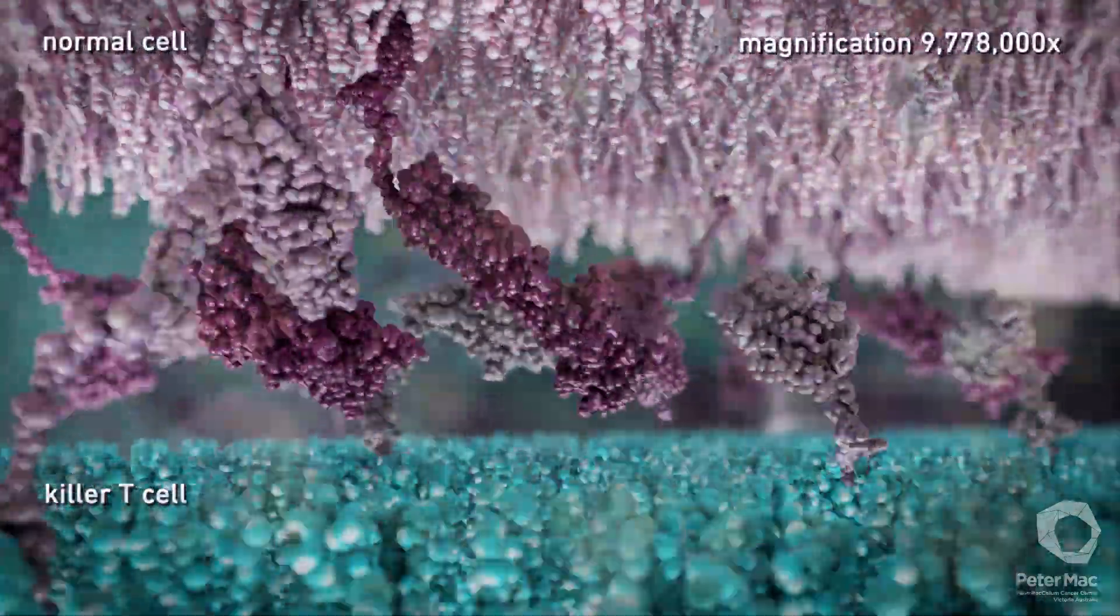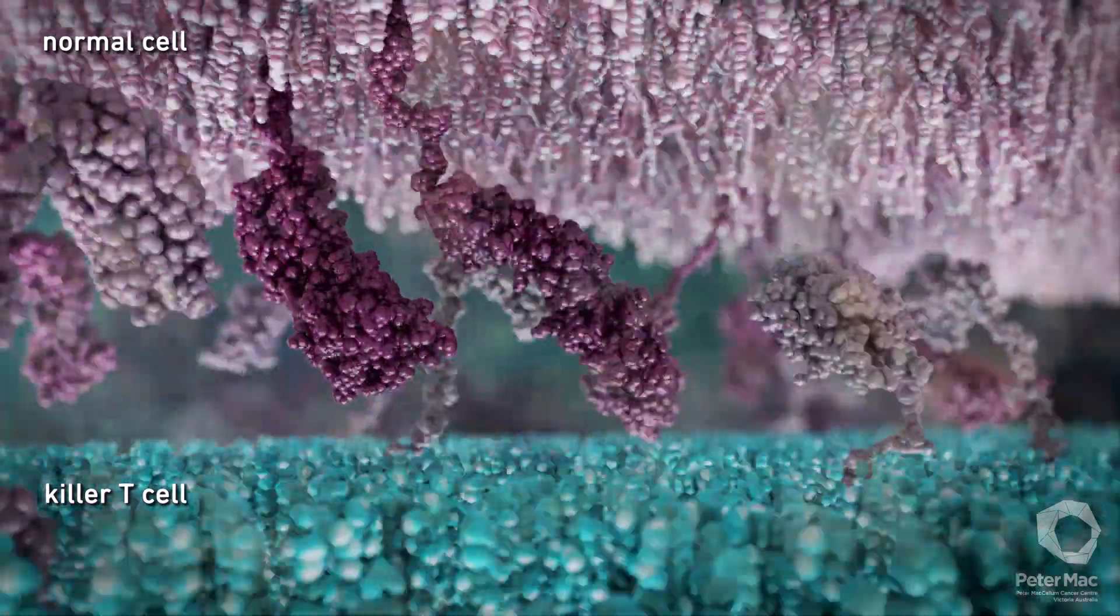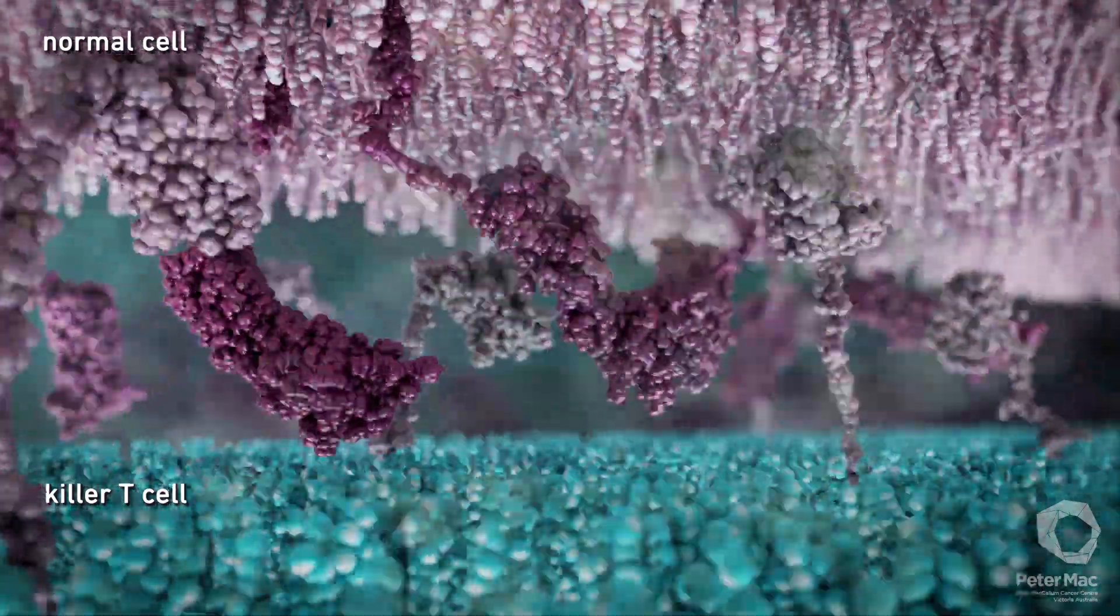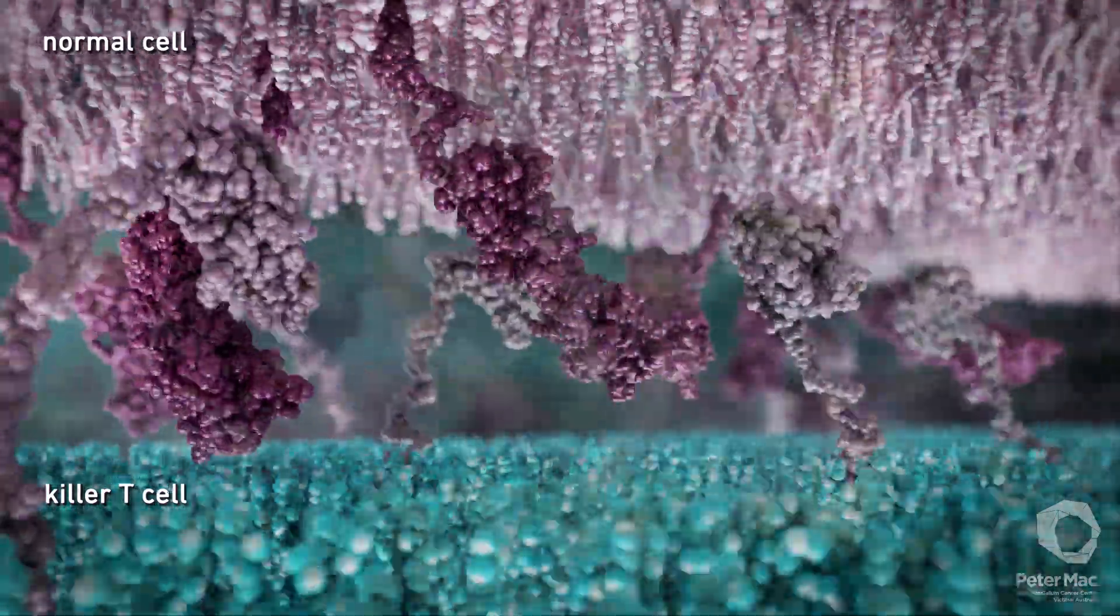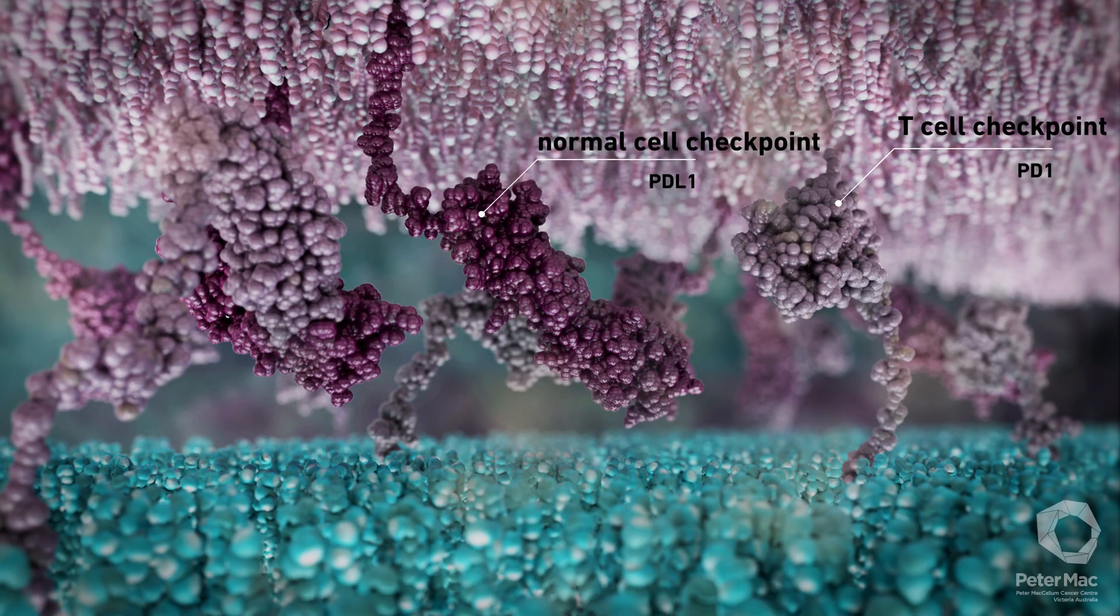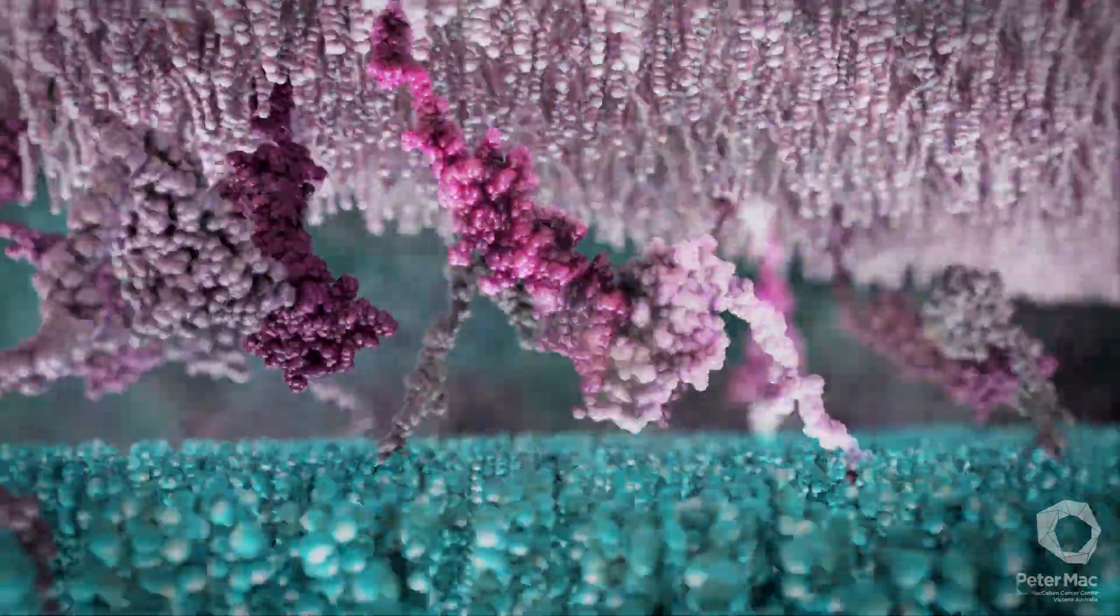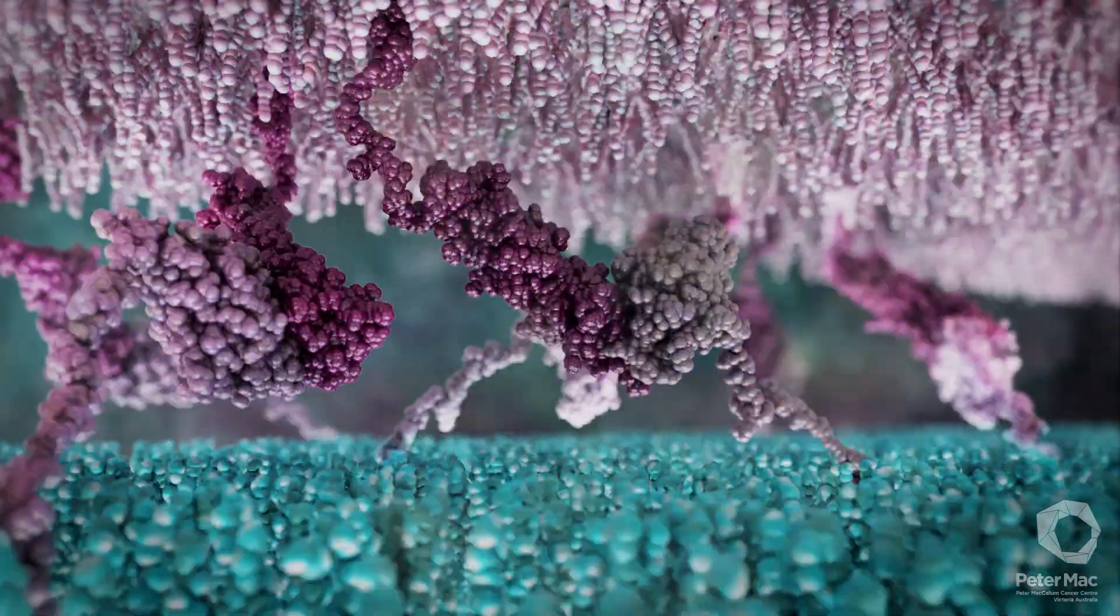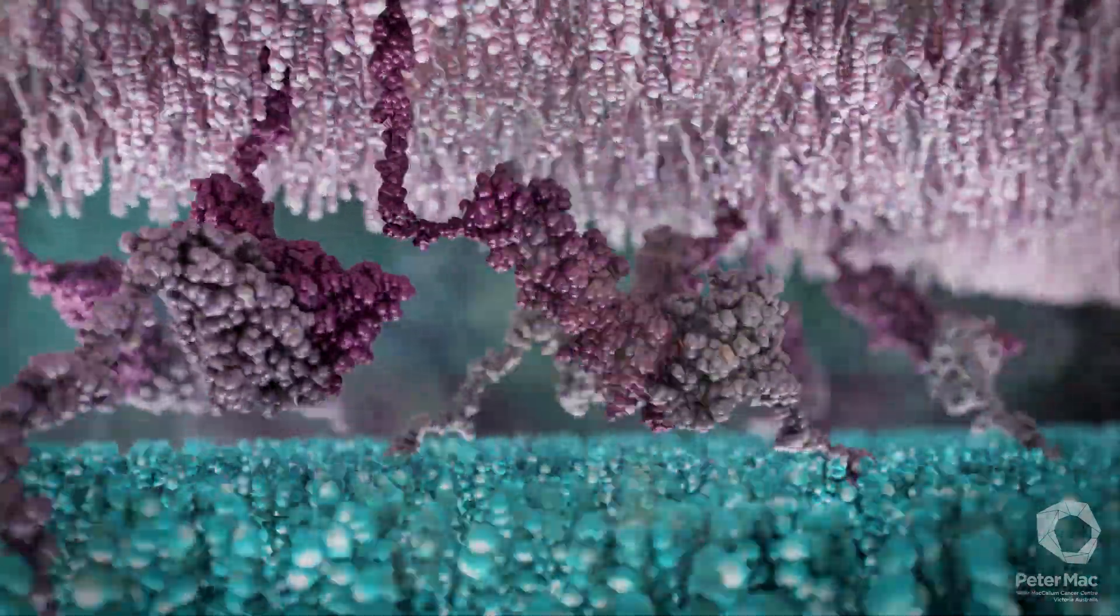Here are some different killer T cell surface receptors. Killer T cells can also differentiate between normal and abnormal cells by using surface checkpoint molecules to look for matching checkpoints on other cells to which it can bind. Once bound, the other cell is seen as normal and won't be harmed by the killer T cell.